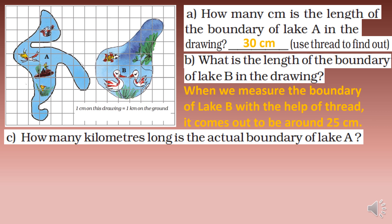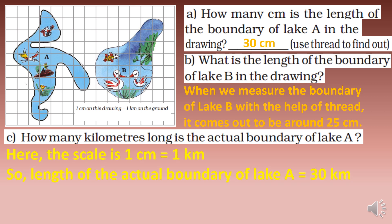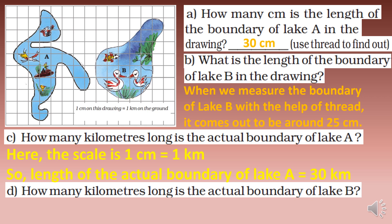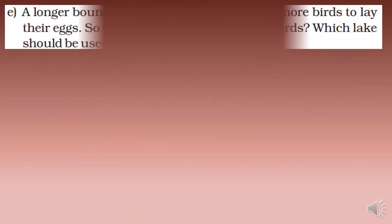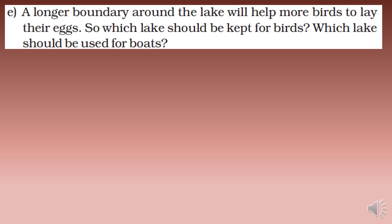How many kilometers long is the actual boundary of Lake A? Using the scale — one centimeter equals one kilometer — the boundary of Lake A is 30 centimeters, so the actual boundary is 30 kilometers. Similarly, the actual boundary of Lake B is 25 kilometers.